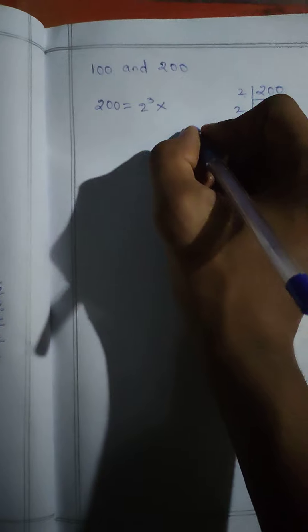We have to take 100 and 200 for a simple example. First, prime factorize 200, which means the big number. 250... 200 is 2s are, 5 times 5. 200 equals 2 cubed into 5 squared.